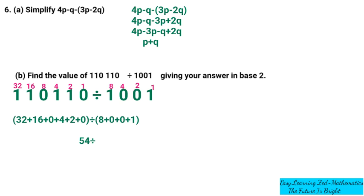We have now converted the numbers in the question into base 10. So we find the quotient: 54 divided by 9 gives us 6.